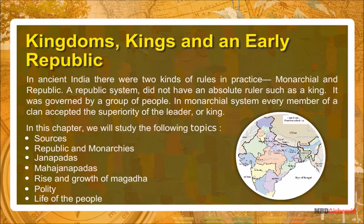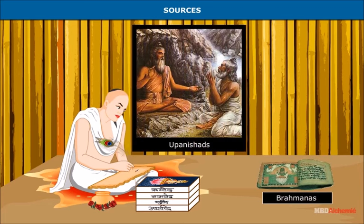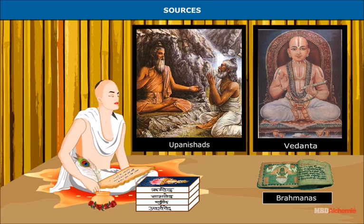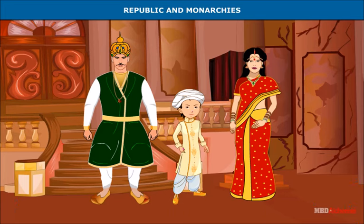Sources: Our main sources of information about this period are the Vedic texts like the Brahmanas and Upanishads, and Buddhist texts like Jataka. They mention the Janapadas and Mahajanapadas which existed during this period. Archaeological materials found at Achichatra, Hastinapur, Koshambi, Ujjain, and Vaishali further corroborate the information provided in the literary texts.